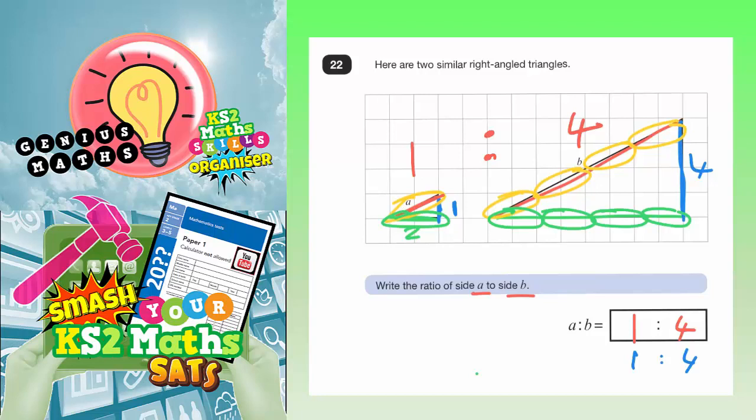Just going back to the blue ones, you could do the same. There's one lot of one square there, but you've got four lots of the one square going down the side. Whichever pair of sides you look at, whether it's the red ones, the green ones, or the blue ones, on the larger shape, the side is always four times bigger, which means every one square on the smaller shape gives you four squares on the larger shape. And that's how we write a ratio of one to four.